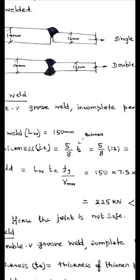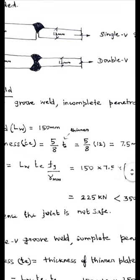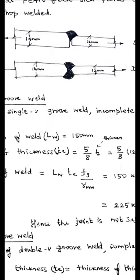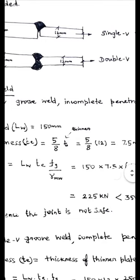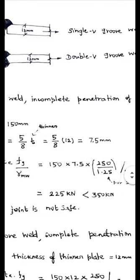For incomplete penetration, you have to assume that effective throat thickness as 5 by 8 times T minimum. T minimum is the minimum of the thickness of the two plates connected. Here the two plates joined are 14 and 12 mm, let us use the 12 mm here, 5 by 8 of 12 is 7.5 mm.